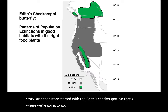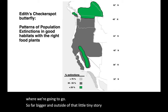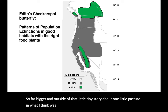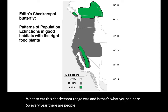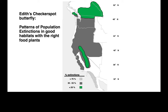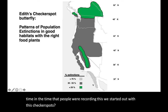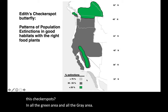Looking at the difference in what the Edith's checkerspot range was and is — that's what you see here. Every year people go out and spot different kinds of butterflies and birds, and they send this data to different groups monitoring it. For some of these things we have 50 or even 100 years' worth of data. We started out with Edith's checkerspots in all the green area, all the gray area, and all the hashed area down here. Now over time some things changed.